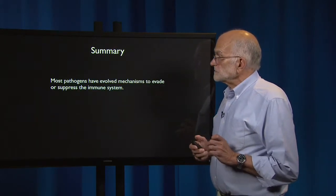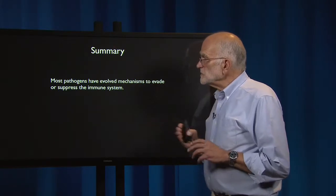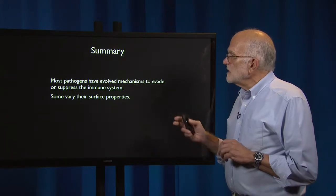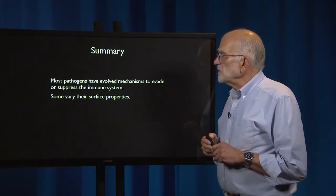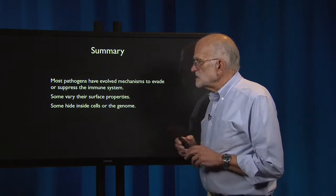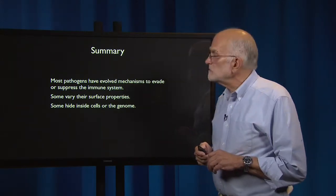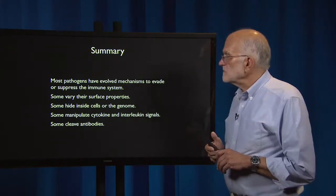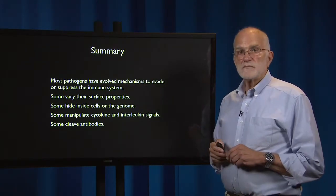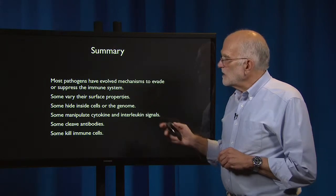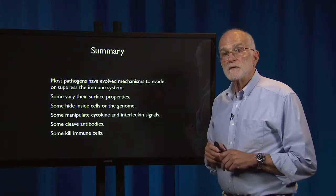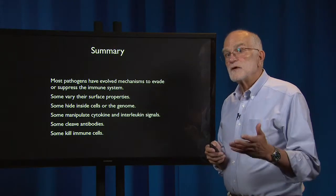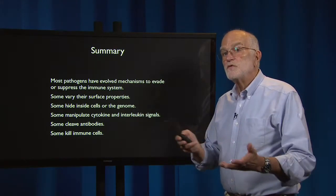To summarize: most pathogens have evolved mechanisms to evade or suppress the immune system. Some vary their surface properties. Some hide inside cells or in the genome. Some manipulate cytokine and interleukin signals. Some cleave antibodies. And some actually kill immune cells. It's a diverse repertoire of countermeasures in this game of move and countermove.